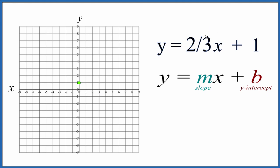So two-thirds, we can think of it as rise over run. So we'll go to our y-intercept here, we'll rise two and run three. So we rise one, two, and we run one, two, three.